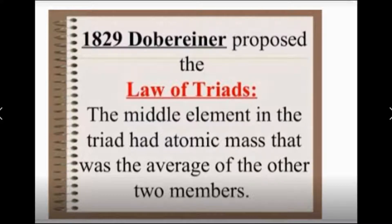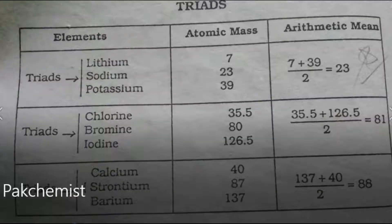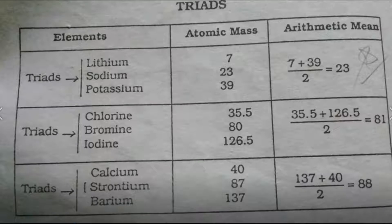It means when we remove the atomic mass of two elements, then the middle element's atomic mass will be found out. Like for example, in the first example you can see lithium, sodium, and potassium triads. Triads means 3 elements. Lithium has mass 7, potassium mass 39. When we find the average of both, we get mass 23, which is sodium.